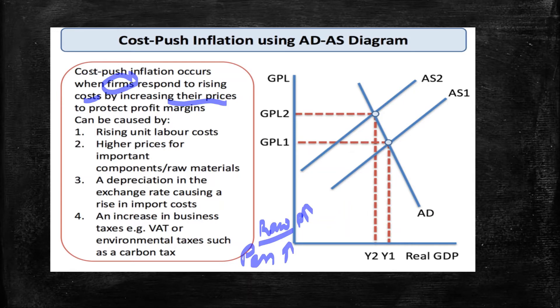Cost-push inflation is mainly driven by firms acting in order to protect their profit margins. Every producer has a profit margin they aim to maintain. When costs rise, prices rise in order to preserve those profit margins.